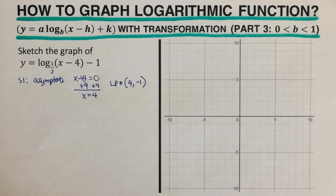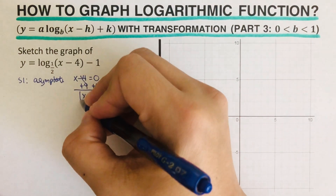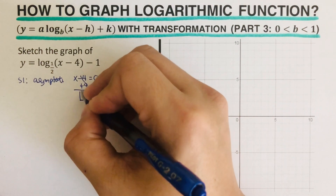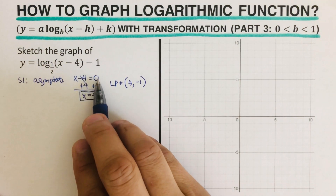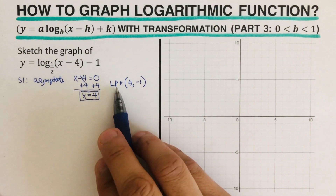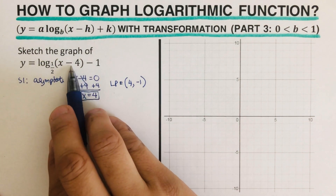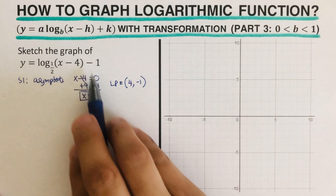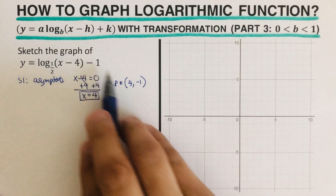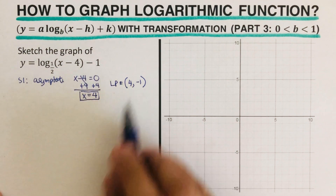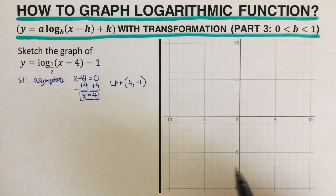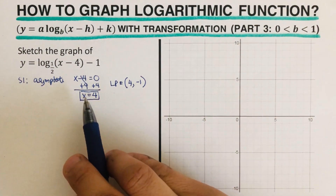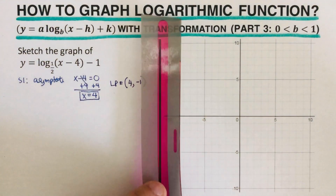I determine the locator point by setting the expression inside the parentheses equal to zero and solving for x. Then for the locator point, remember we switch and keep — so that would be positive four and negative one. Part of this step is to sketch the asymptote and the locator point on the graph.